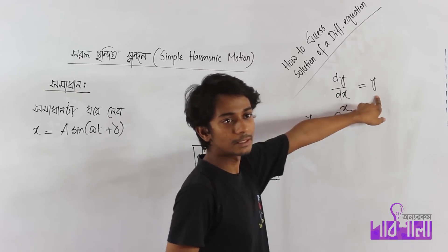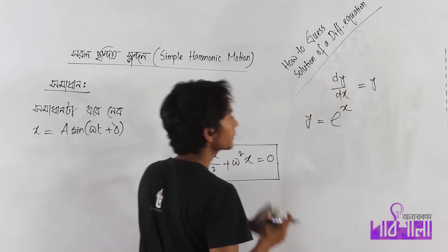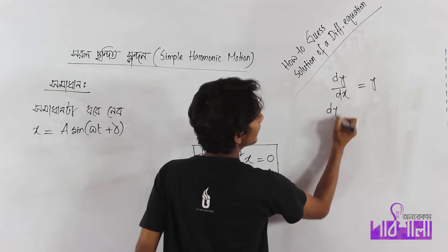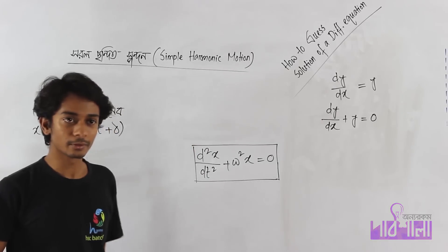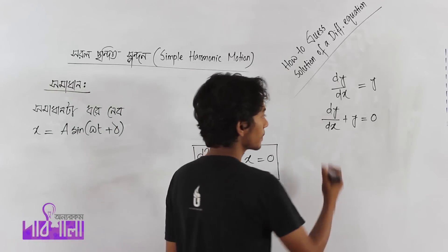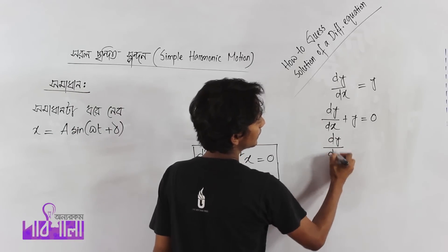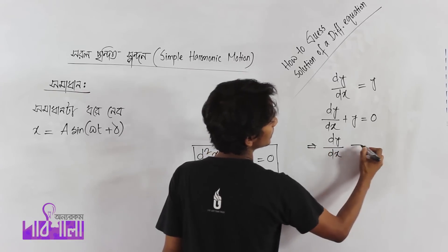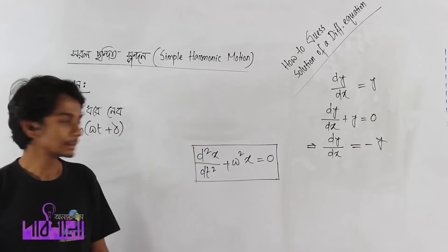Let's take a look at this. Let's say dy/dx plus y equal to 0. So dy/dx divided by x equals 0 minus y.